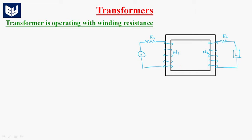Whenever voltage V1 is given to the primary winding, some amount of EMF E1 will be induced, which results in production of flux in the magnetic core. This flux links with the secondary winding, which results in production of induced EMF E2 in the secondary coil. Now, a voltage V2 appears across the load.